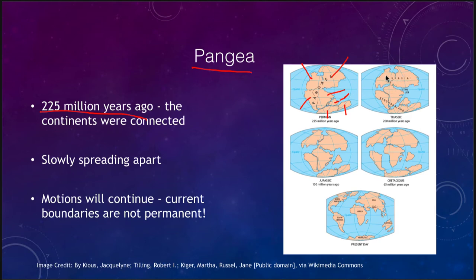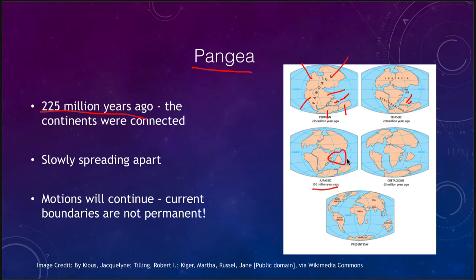Another 50 million years later, back in the Jurassic period, North America was separating out by itself. At this point, India would have been an island continent, still moving northward. Over the next 100 million years, it continued to move northward, getting further and further north, and eventually colliding into the Eurasian plate. That is where we get a great collision of those two continental plates and mountains being created.